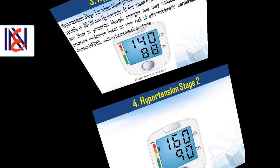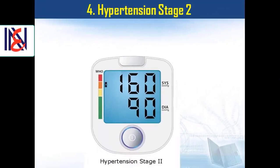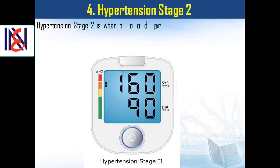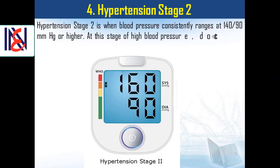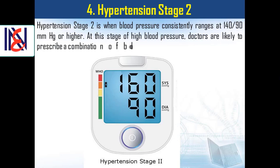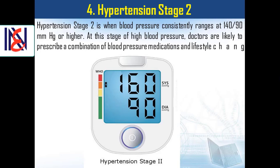4. Hypertension Stage 2. Hypertension Stage 2 is when blood pressure consistently ranges at 140 over 90 mmHg or higher. At this stage, doctors are likely to prescribe a combination of blood pressure medications and lifestyle changes.